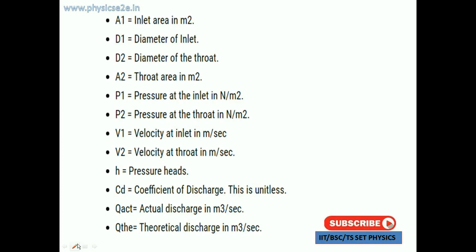The terms are: a1 equals inlet area in m², d1 equals diameter of inlet, d2 equals diameter of throat, a2 equals throat area in m², p1 equals pressure at inlet in N/m², p2 equals pressure at throat in N/m², v1 equals velocity at inlet in m/s, v2 equals velocity at throat in m/s, h equals pressure head, and Cd is the coefficient of discharge with no units as it is a ratio. q_actual is the actual discharge in m³/s and q_theoretical is the theoretical discharge in m³/s.